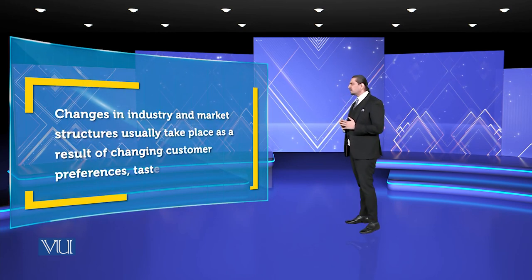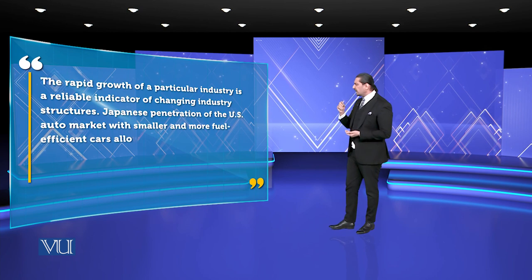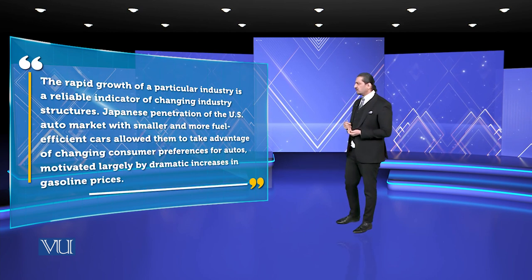Aluminum, which started in Montreal, will be the same way. The changes in industry and market structures usually take place as a result of changing customer preference — meaning taste and new values. The 21st century has seen the standardization of quality. That which is obvious to the standard becomes the whole structure of the market. The rapid growth of a particular industry is a reliable indicator of a changing industry structure.